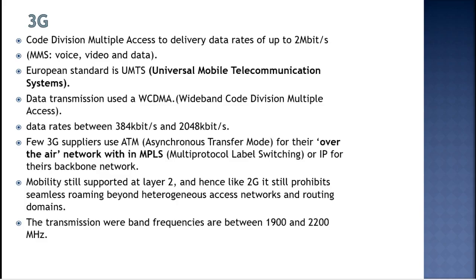3G transmissions used band frequencies of 1900 to 2200 megahertz. UMTS license holders in the UK — United Kingdom — were the first to launch 3G mobile networks. They had a 20-year license for UMTS — Universal Mobile Telecommunication System — with the condition that 80 percent of the population would have 3G mobiles by 2007, and they achieved this.